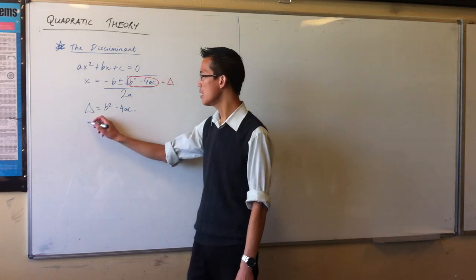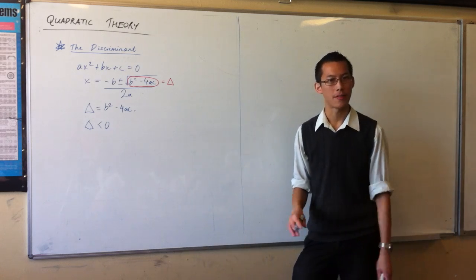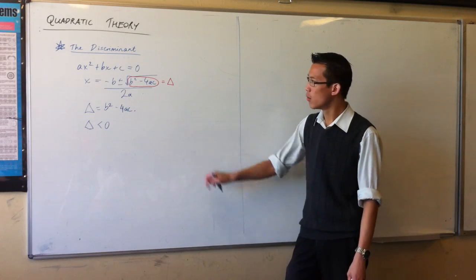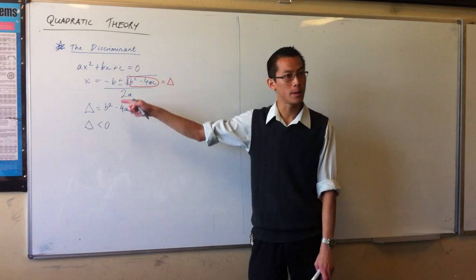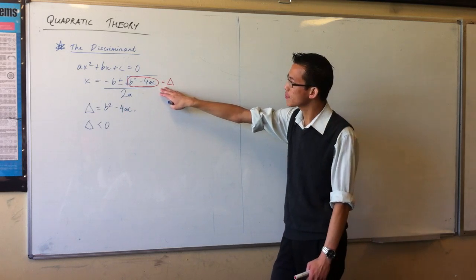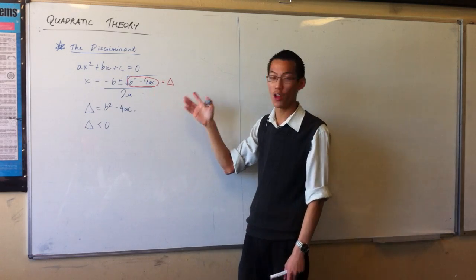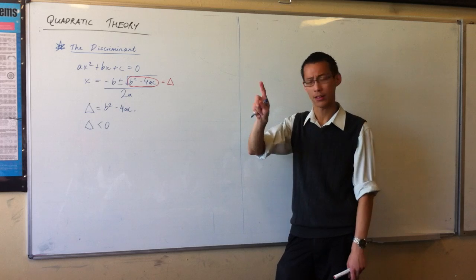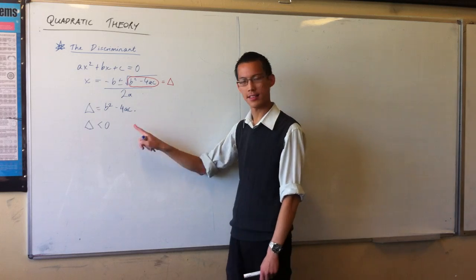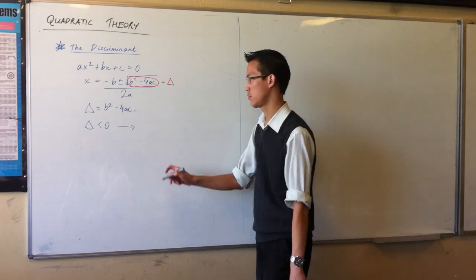Well, let's think about this. If delta were negative, if the discriminant was less than zero, what would happen to the quadratic formula? Well, because you've got a negative number underneath the square root, this thing kind of explodes because you can't get values out of it, at least not real values. So, if the discriminant is less than zero, what that implies is you have no real roots.